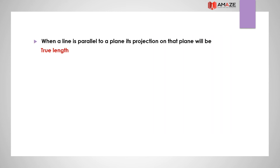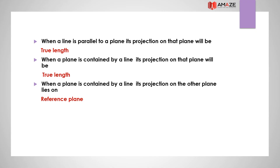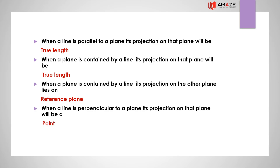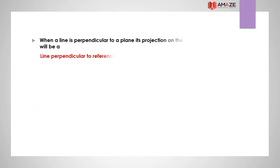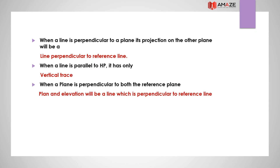When a line is parallel to a plane, its projection on that plane will be true length. When a line is contained by a plane, its projection on that plane will be true length and its projection on the other plane lies on the reference line. When a line is perpendicular to a plane, its projection on that plane will be a point. When a line is parallel to HP, it has only a vertical trace. When a plane is perpendicular to both reference planes, the plan and elevation will be a line perpendicular to the reference line.